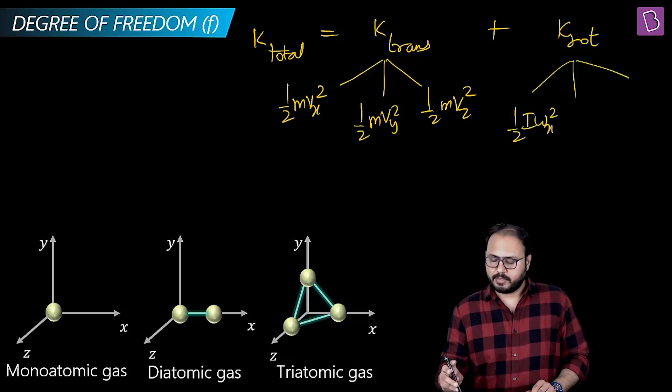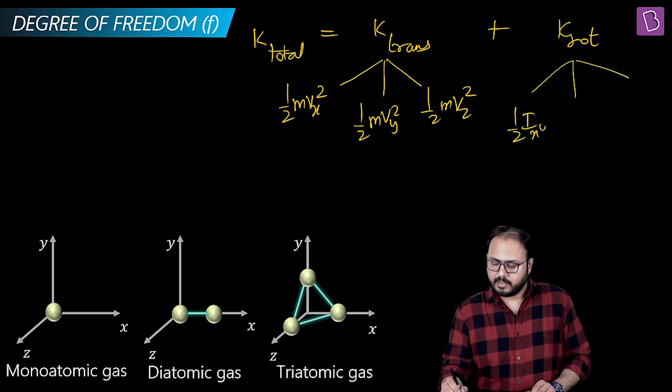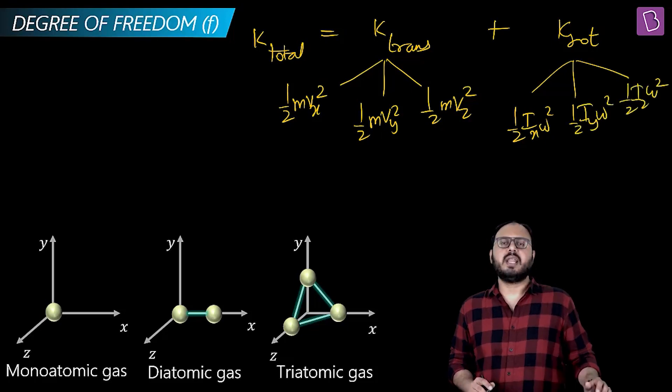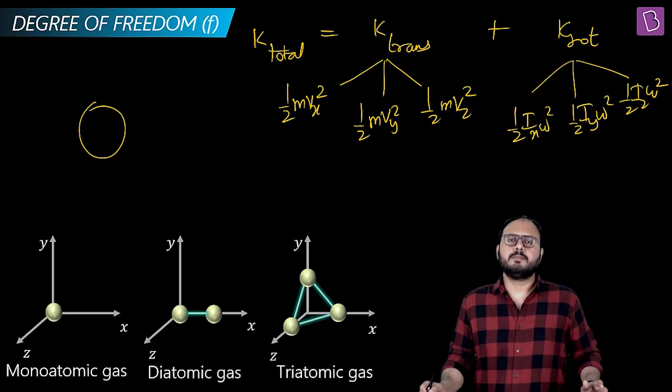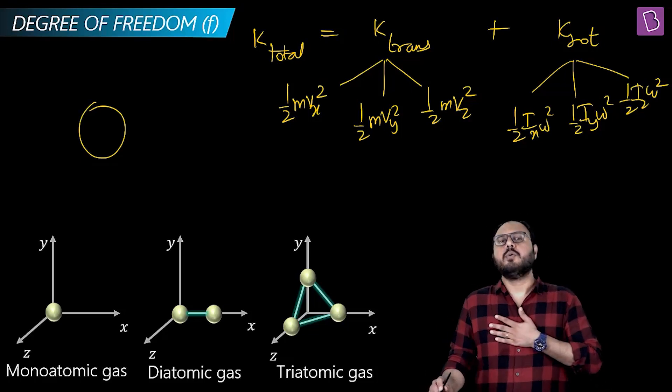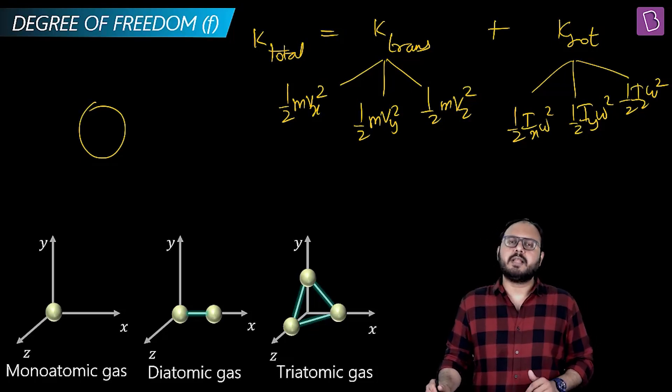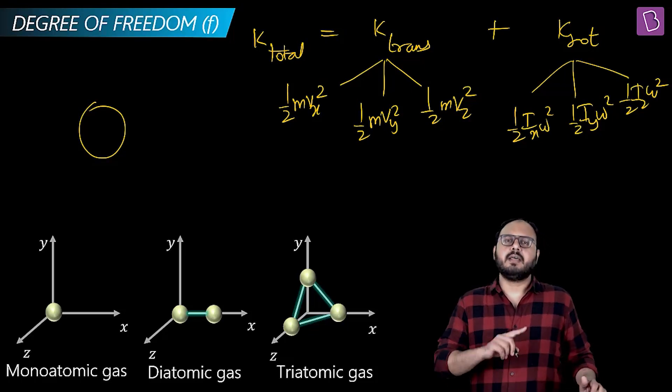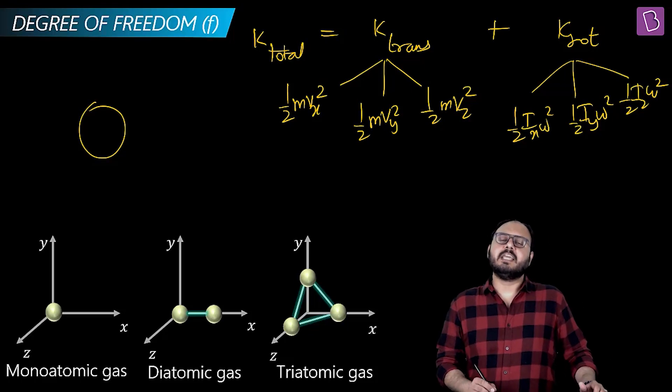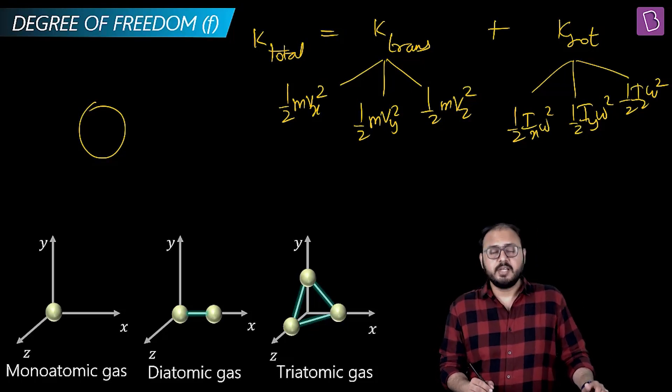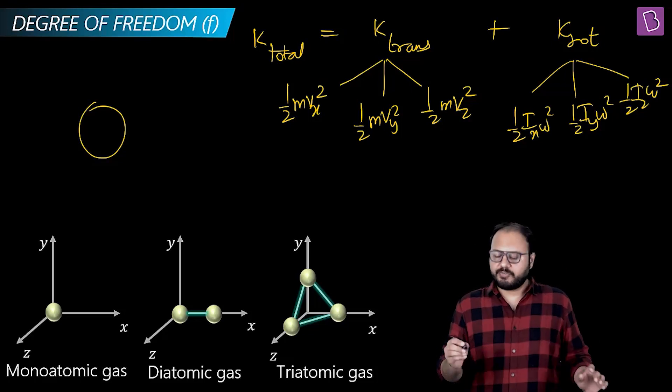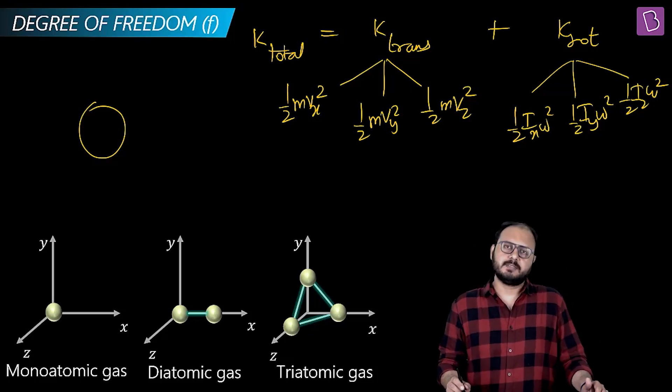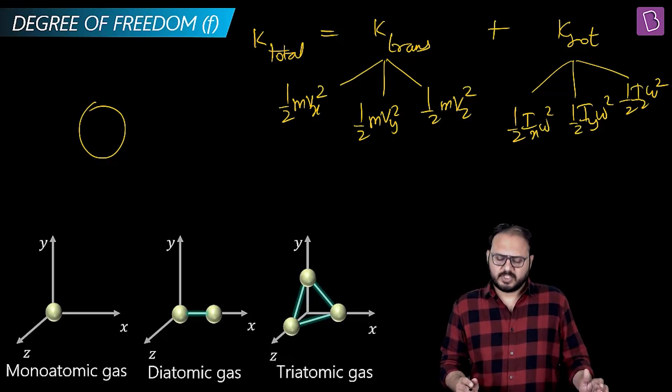K rotational: half Iₓωₓ², half Iᵧωᵧ², and half Iᵤωᵤ². Correct or not? Correct. As far as the molecule is concerned, this particle's radius is zero. The KTG postulate says that the size of the molecules is absolutely incomparable, so the radius is so small that the inertia is almost zero. So for a monoatomic gas, the contribution of K rotational is zero.